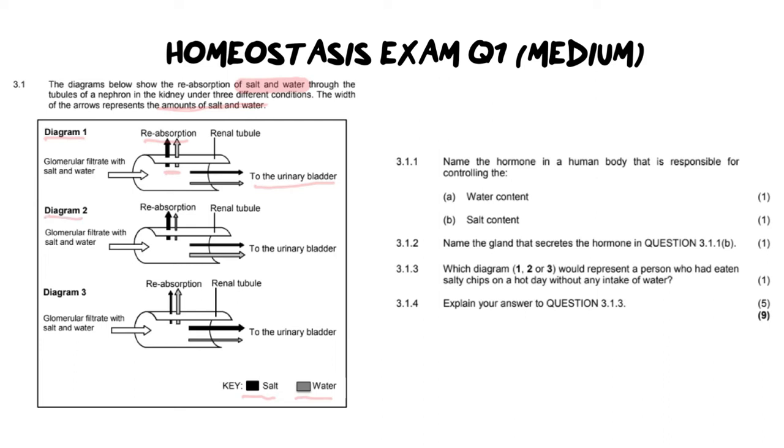However, if we move to diagram two, you will notice that the salt arrow is thicker, which means it's got more salt going into the blood. And if we look at the urinary bladder, we have a thicker water arrow, which leads me to believe that this is a day where we are reabsorbing salt and we are getting rid of excess water. And when you make a huge amount of urine, we can assume that this is going to be a cold day because that's when you produce more urine. You get rid of excess water because you sweat less.